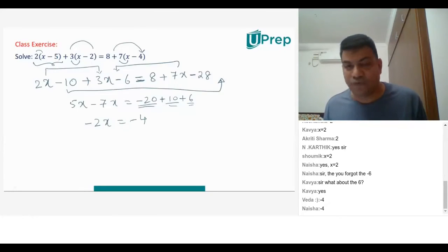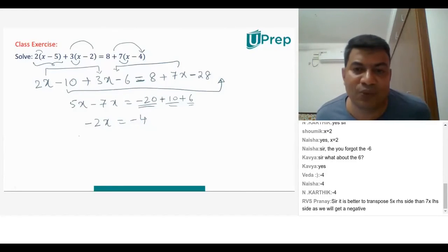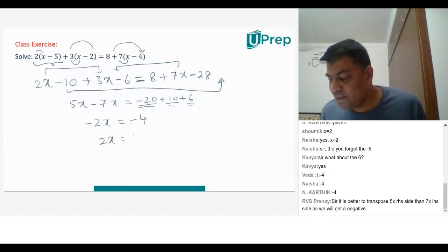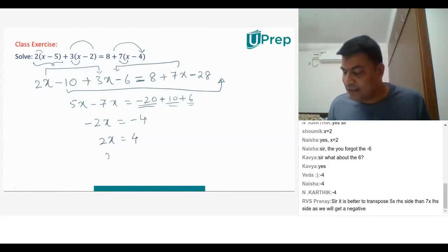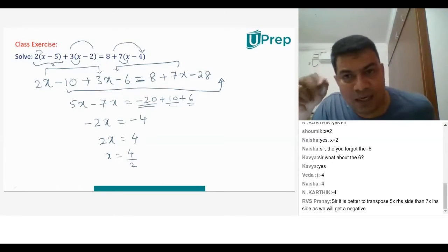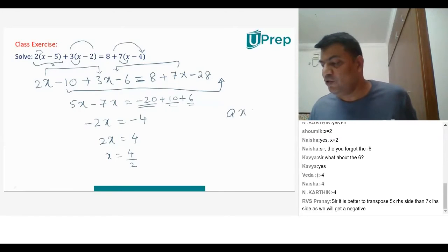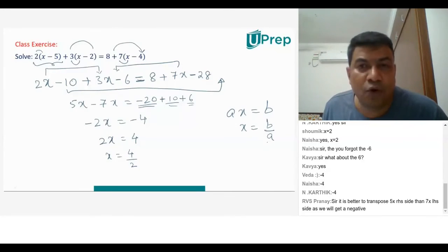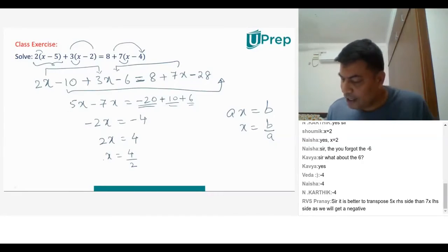So you have minus 2x is equal to minus 4. You can multiply with minus 1 on both sides. Therefore, the minus of minus 2x will become 2x and minus of minus 4 will become plus 4. Now your x is equal to 4 divided by 2. This 2 will come down — whenever we have ax equals b, x will become b by a. So your x is equal to 2.